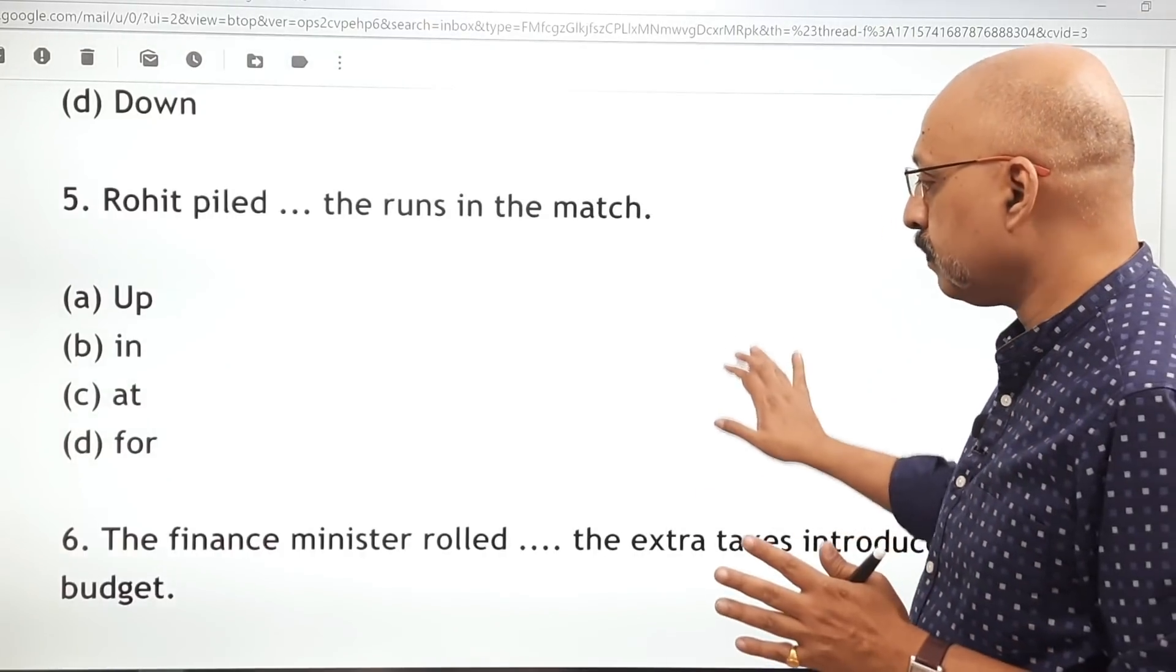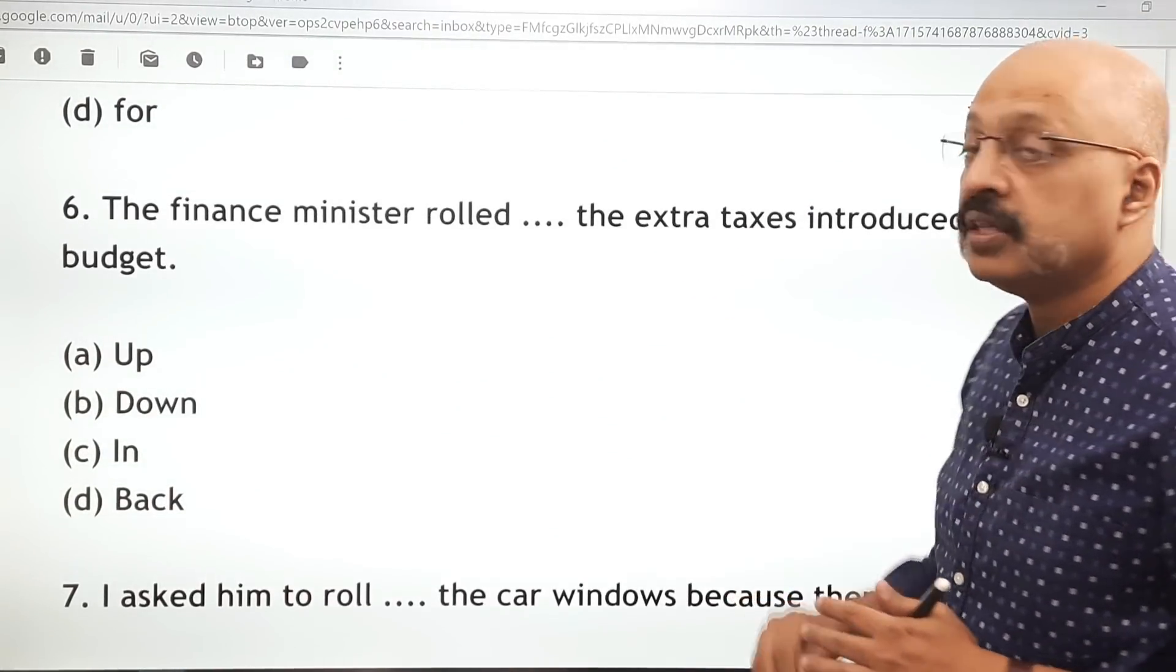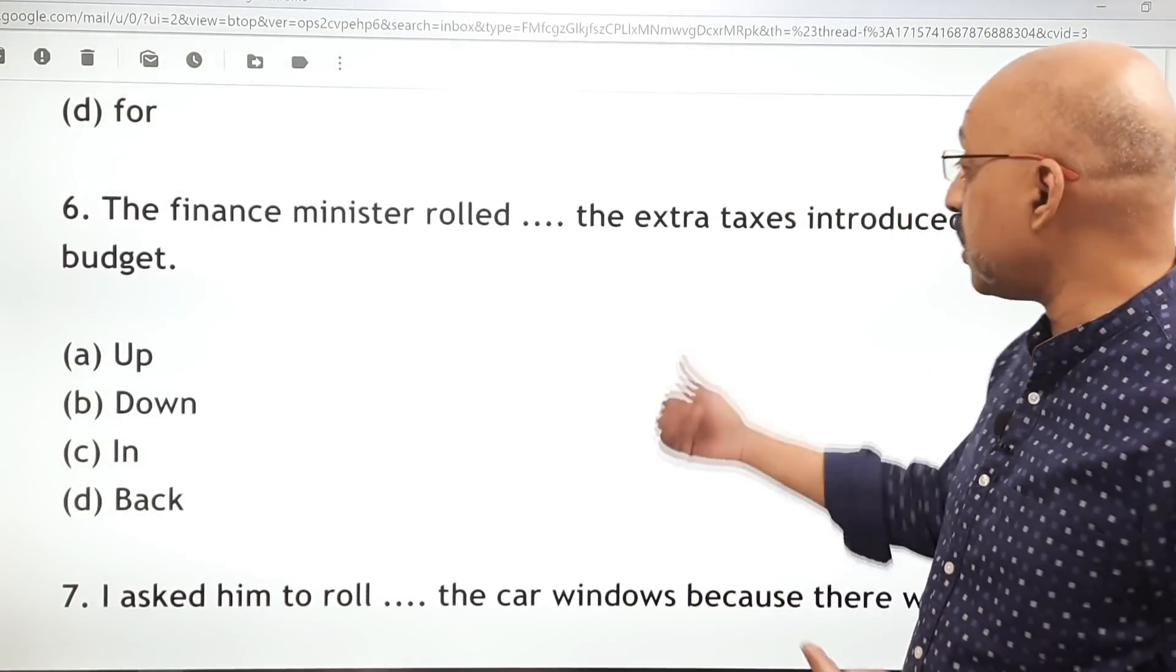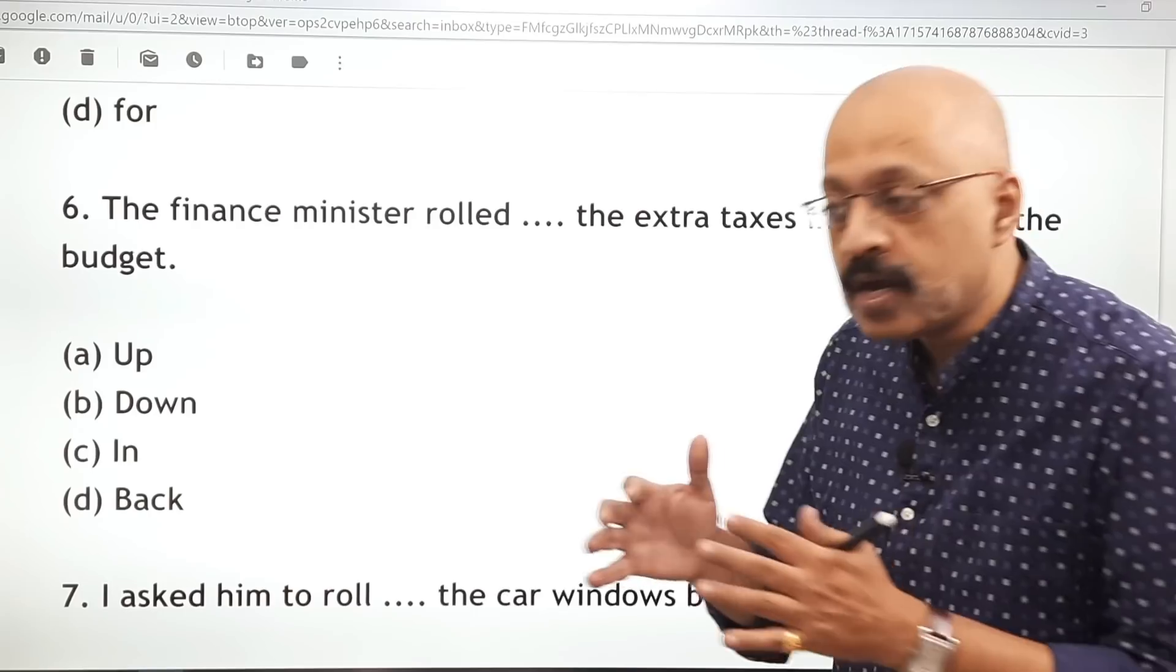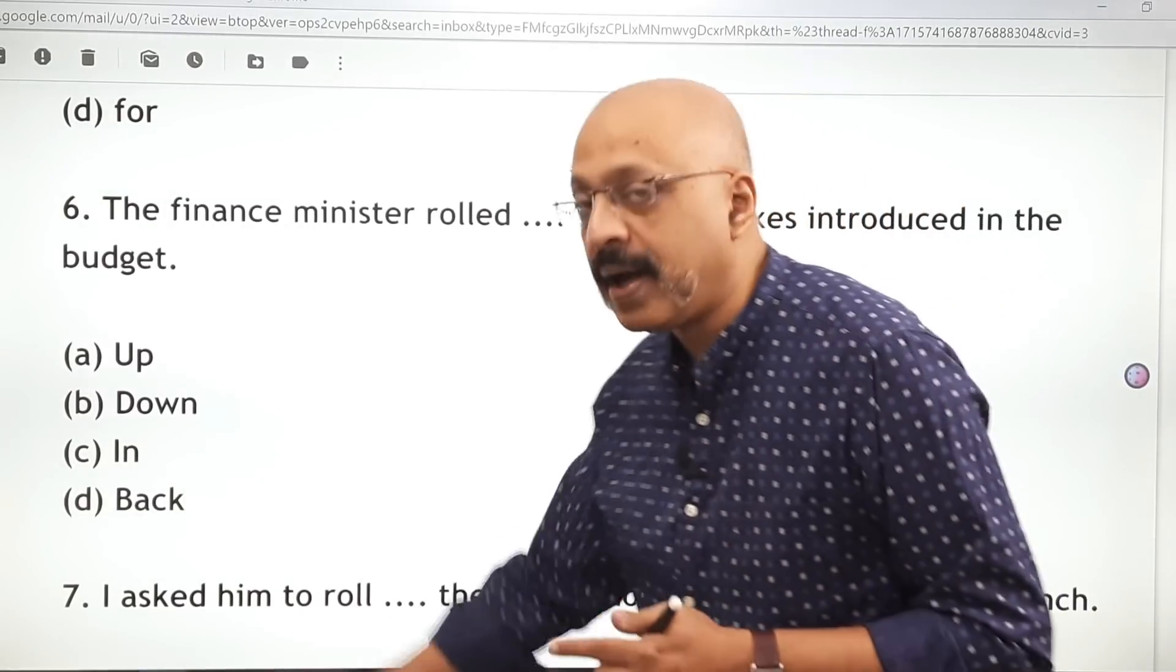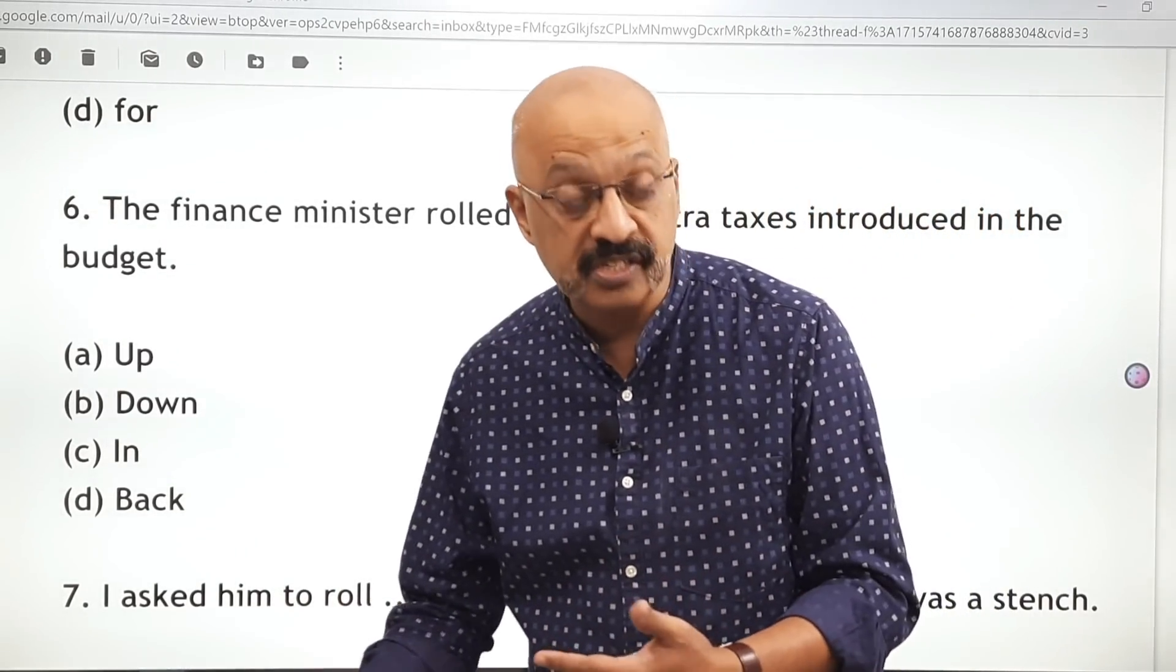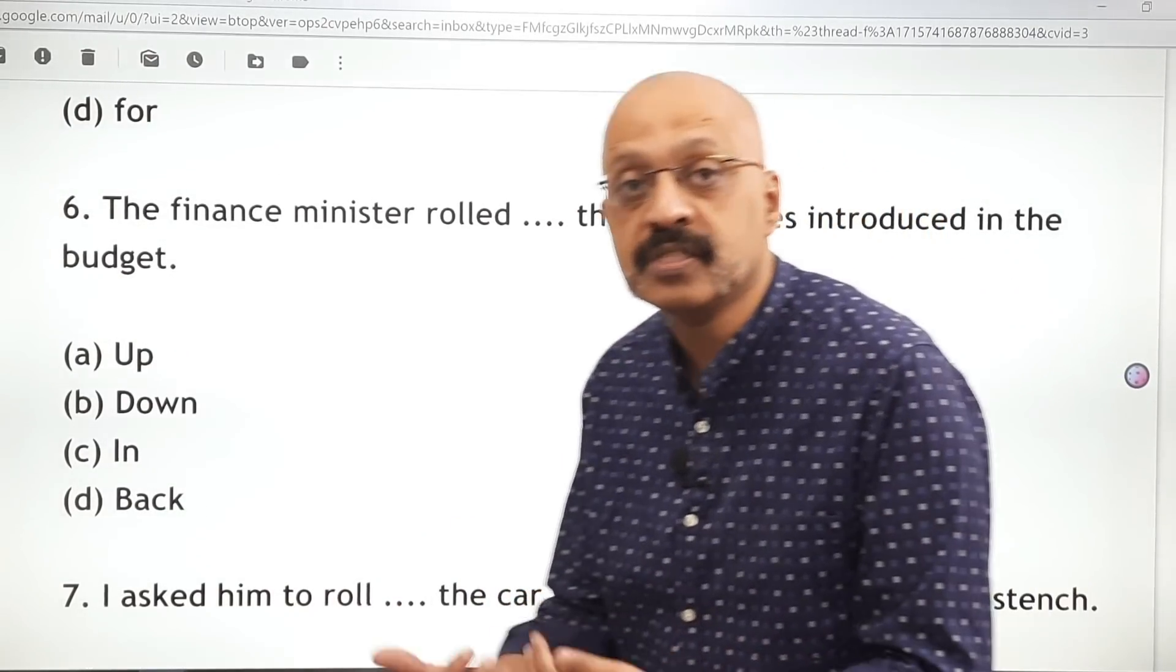The finance minister rolled the extra taxes introduced in the budget. Now, rolled means the extra taxes, people were not liking it, there was opposition to it. So he rolled back. Rolled down will not be a thing. Rolled back is in fact a term which is used a lot in parliamentary procedures these days. So when a decision is taken back, it is seen as a rollback.